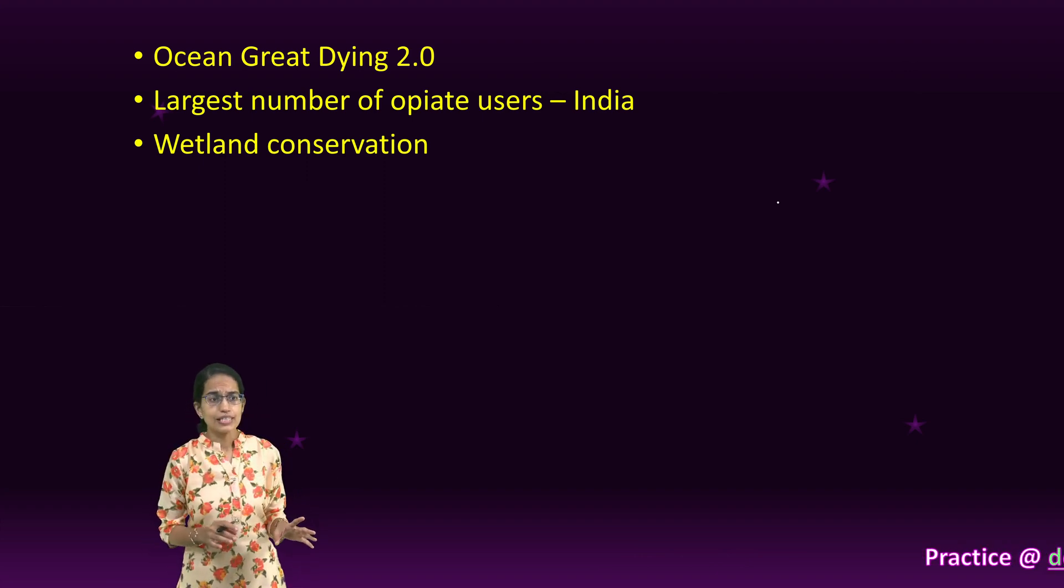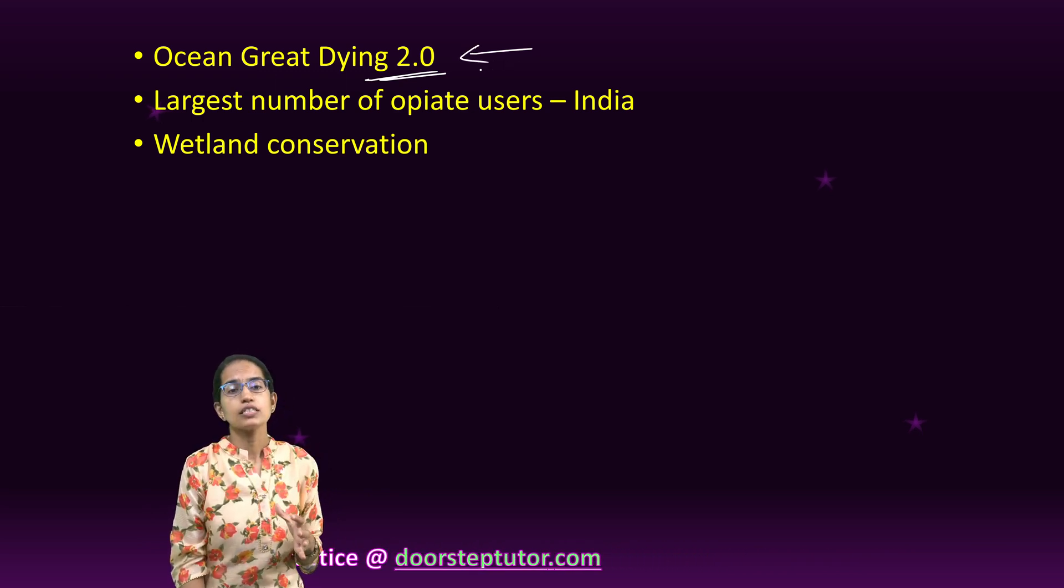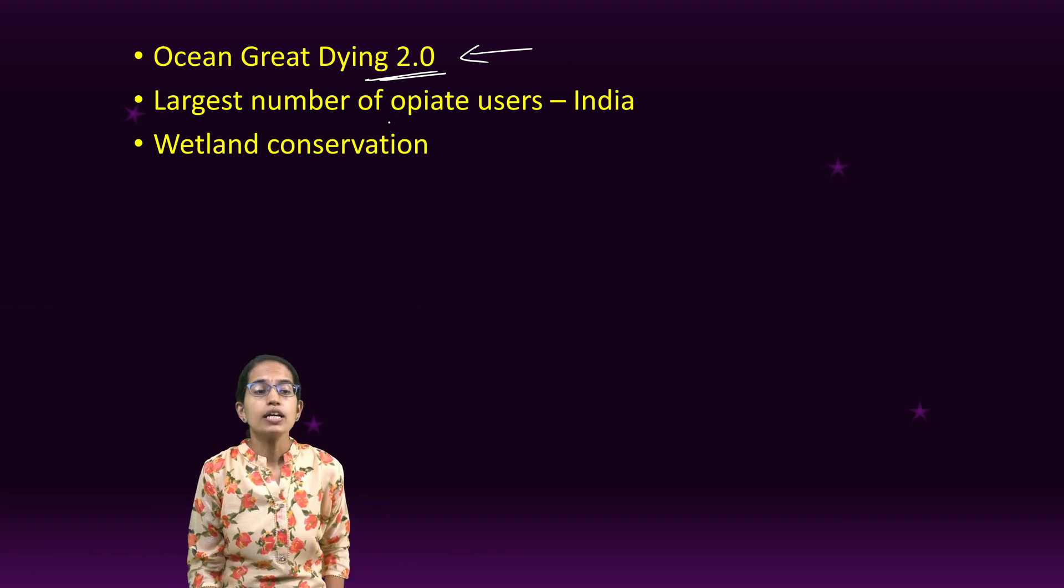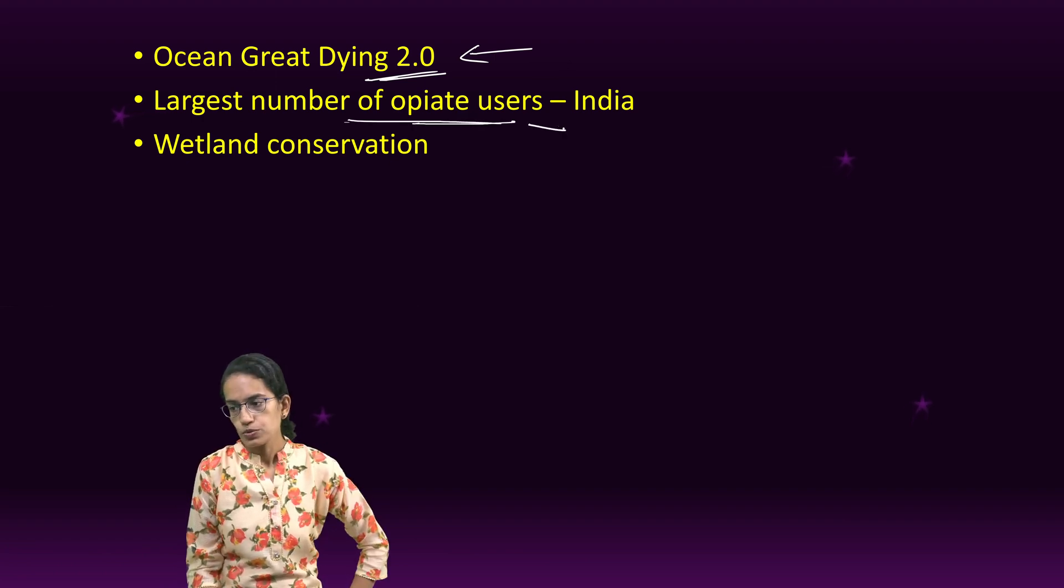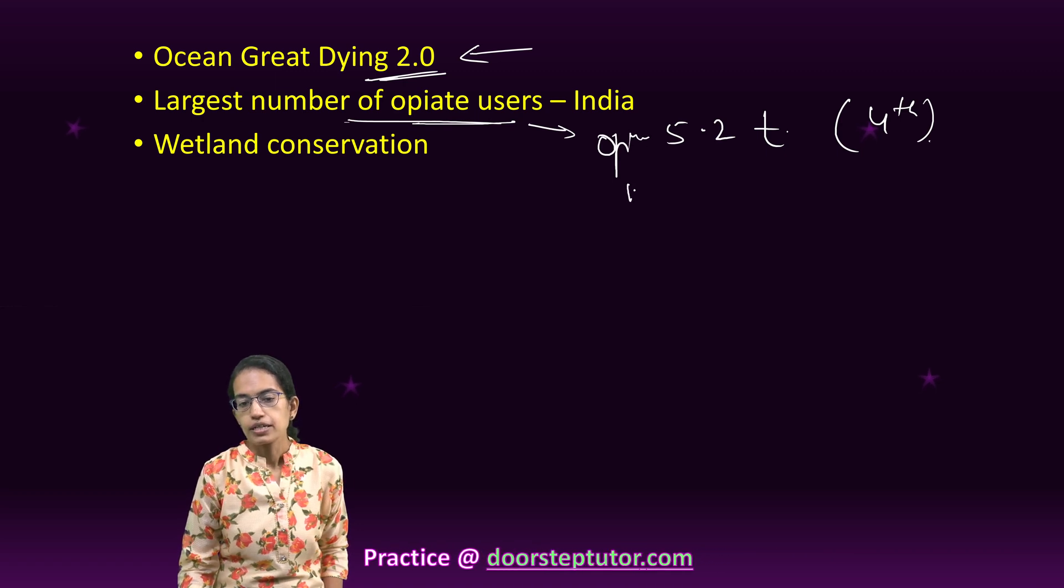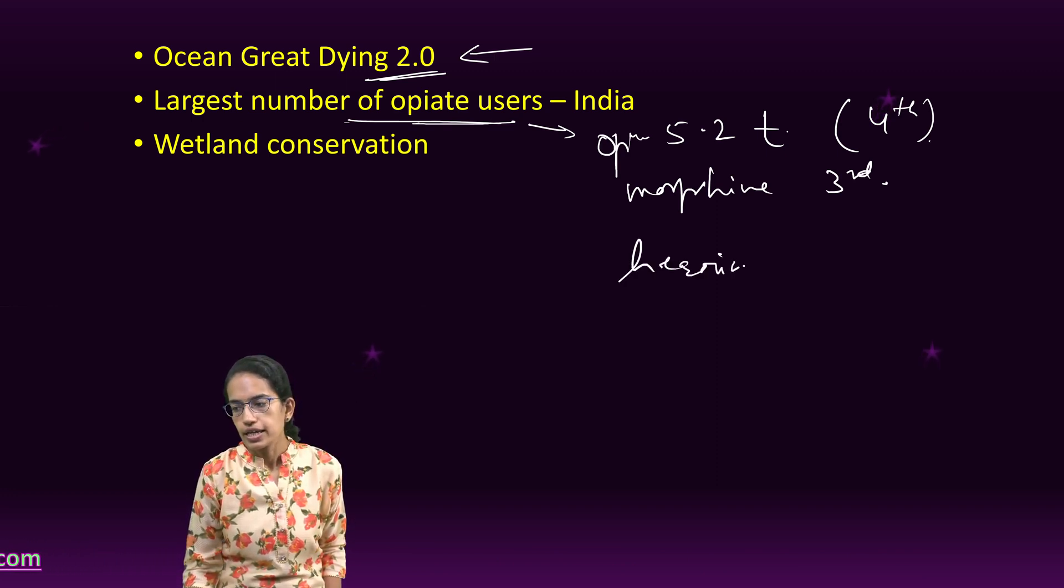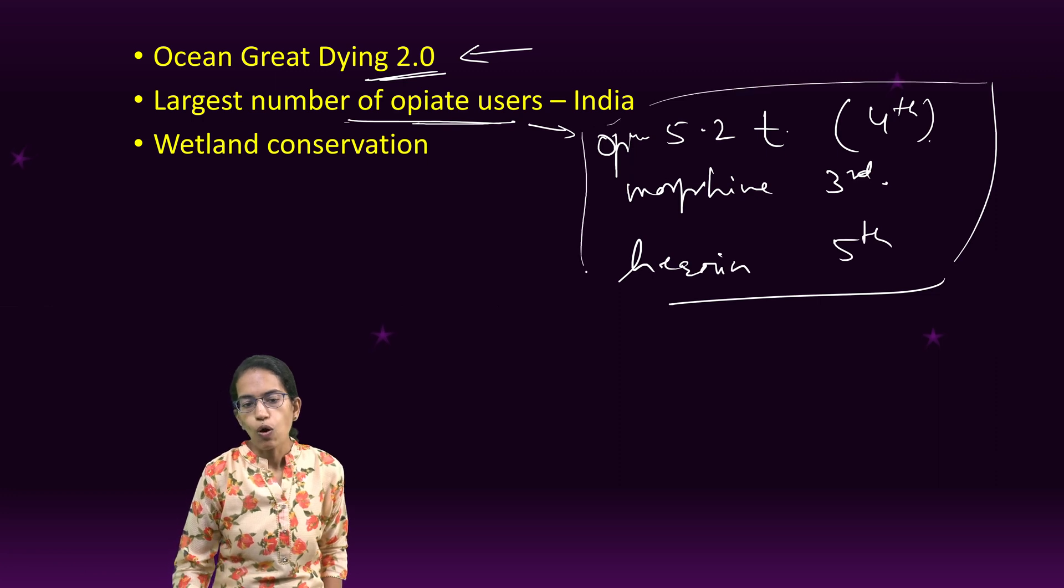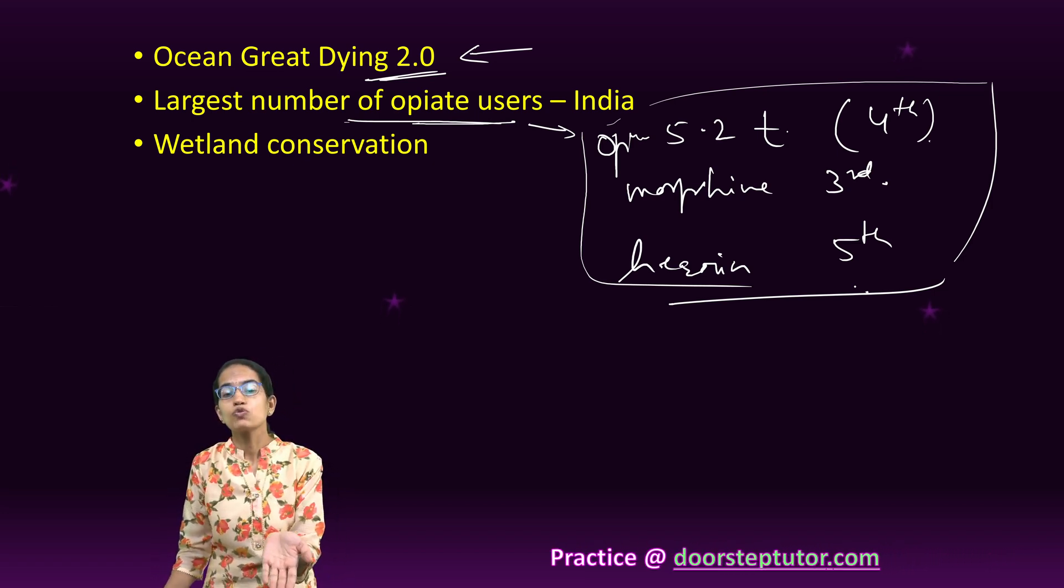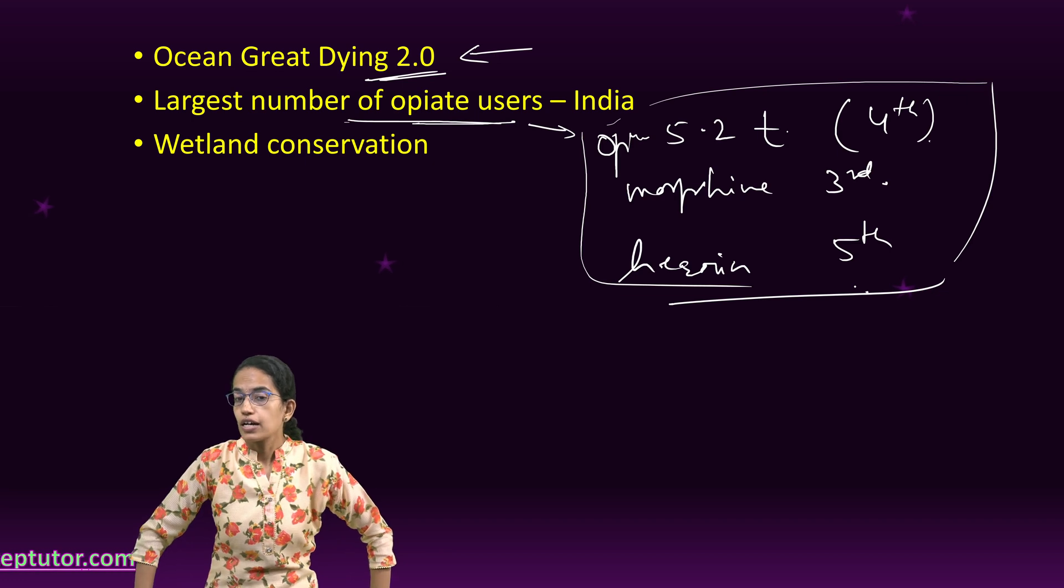The next is Ocean Great Dying 2.0, mainly focusing on the whales and the dolphins, the creatures which are within the oceans and their impact. Now this has been covered in the Down to Earth edition of July itself. Extremely important: India has the largest number of opiate users. It is believed that 5.2 tons of opium—where India stands fourth globally in terms of opium, in terms of morphine India stands nearly third in the rank, in terms of heroin India stands fifth. So there has been a huge use of the opium products. Tramadol, which is one of the drugs that is used as a pain medication, is even used for non-medical purposes and is one of the highest suppliers within Indian market.